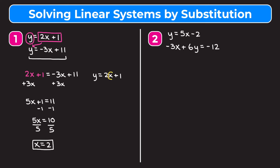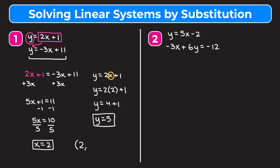We replace x with the value we just found: y equals 2 times 2 plus 1. Simplifying, 2 times 2 is 4, and 4 plus 1 gives us y equals 5. So our answer is x equals 2 and y equals 5, which can be written as the coordinate point (2, 5).